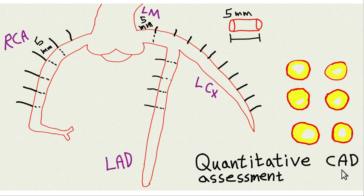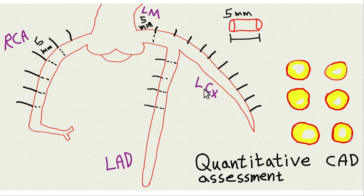He had a quantitative method for autopsy of the coronary artery. Here's the main coronary artery — the right coronary artery, the left main coronary artery, which bifurcates into the left anterior descending (LAD) and the left circumflex (LCX). He would measure them in five-millimeter increments, cut them into separate segments at five-millimeter intervals, and then measure the cross-section — the amount of atherosclerosis and amount of narrowing.